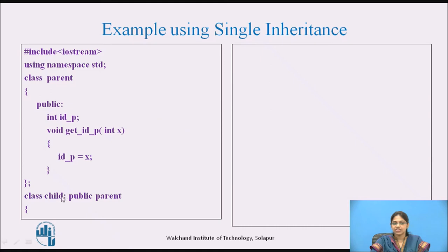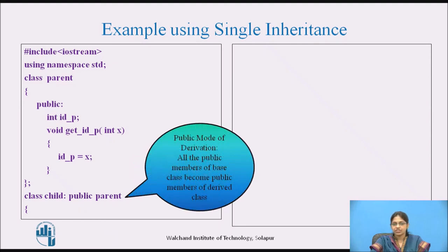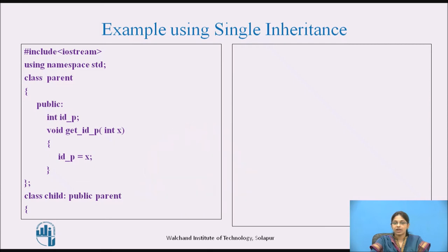From the parent class, the class 'child' has been declared with public mode of derivation, derived from the class 'parent'. Under public mode of derivation, all the public members of the base class become public members of the derived class. The derived class has a data member 'idc' and a member function 'get_idc' which assigns the value of x to the idc data member.